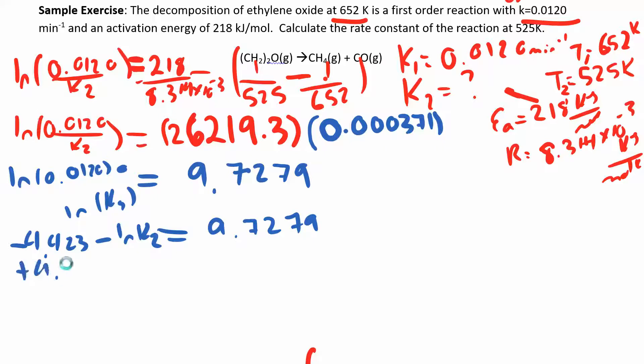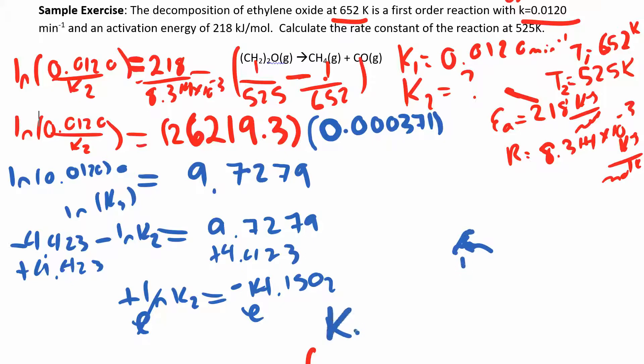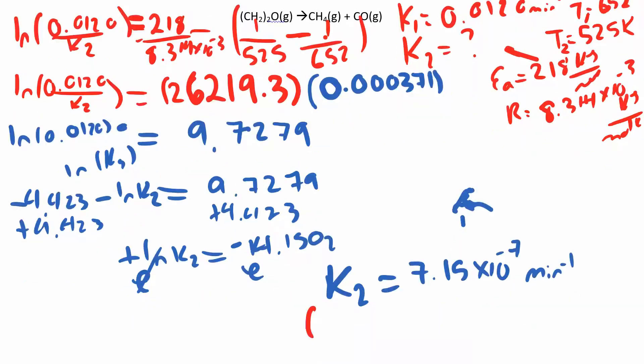I'm going to add 4.423 on both sides. I got negative natural log of K2 equals 14.1502. I'm going to get the negative on the other side and then e to both sides. I get e to the natural log of K2 is e to the negative 14 point whatever. I get 7.15 times 10 to the negative 7. And the units are minutes to the negative 1.